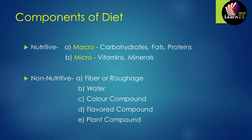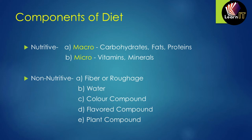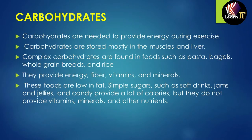Components of diet are divided into two: nutritive and non-nutritive. Nutritive components provide nutrition and are divided into macro and micro. Macro includes carbohydrates, fats, and proteins; micro includes vitamins and minerals. Non-nutritive components do not directly provide nutrition but help in other ways. They are divided into five parts: fiber or roughage, water, colored compounds, flavored compounds, and plant compounds.